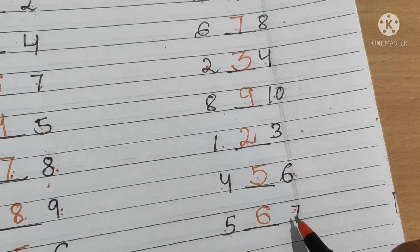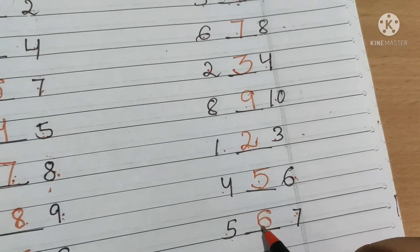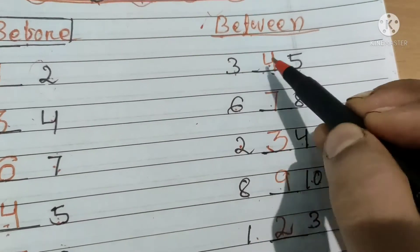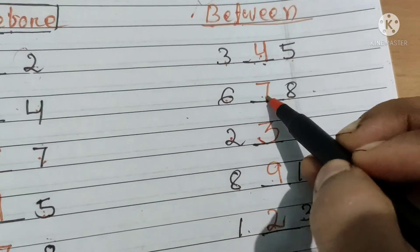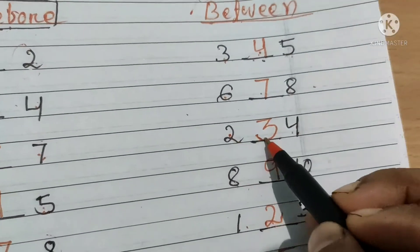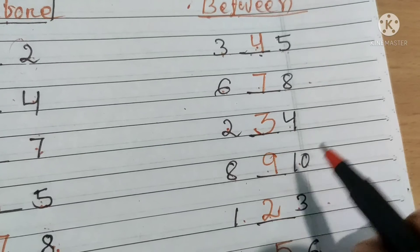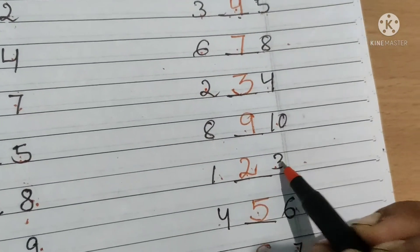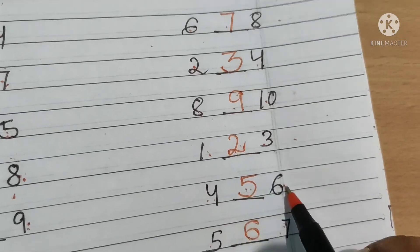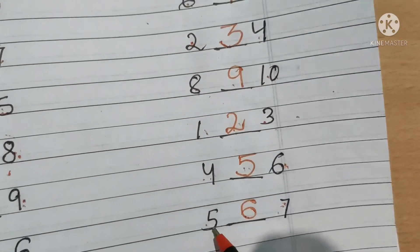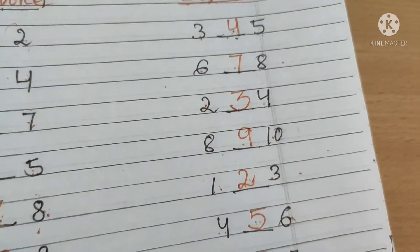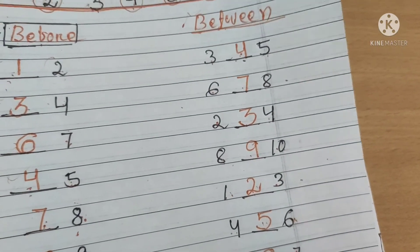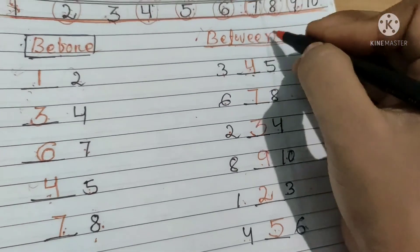Five and seven ke beech mein number six aata hai. Isse hum aise bhi padenge: like three, four, five — six, seven, eight — two, three, four — eight, nine, ten — one, two, three — four, five, six — five, six, seven. Jab hum aise padhenge toh hume pata chal jayega ki between number six aata hai.